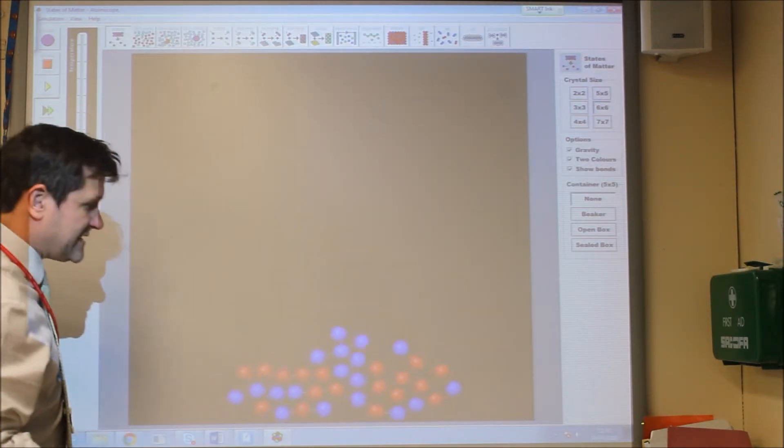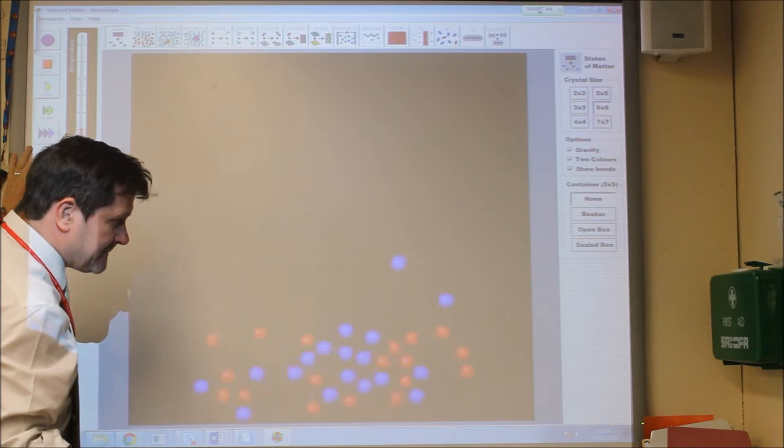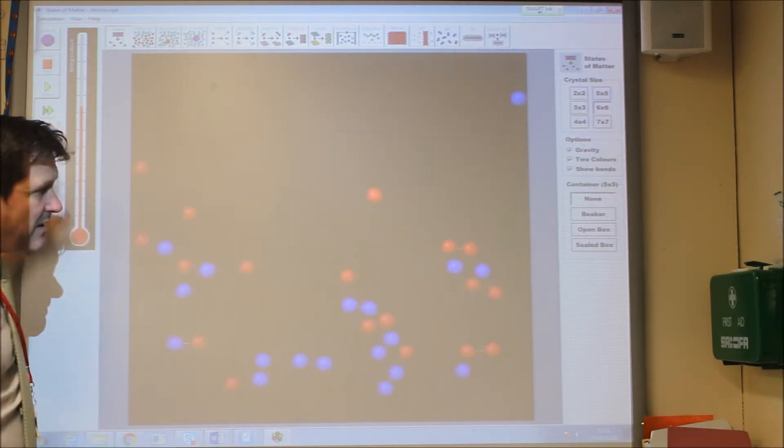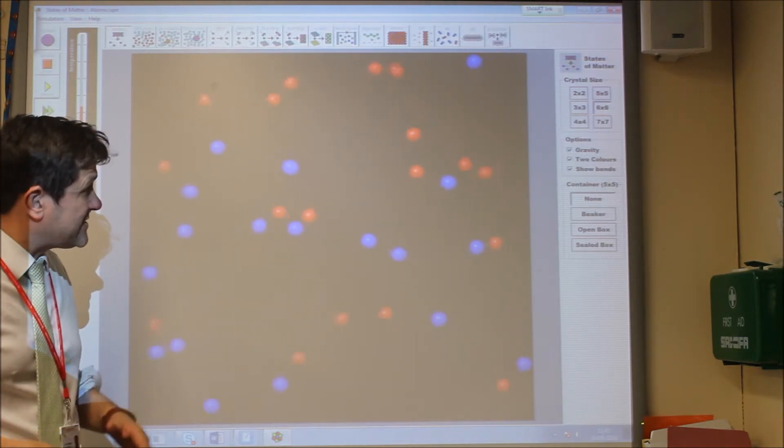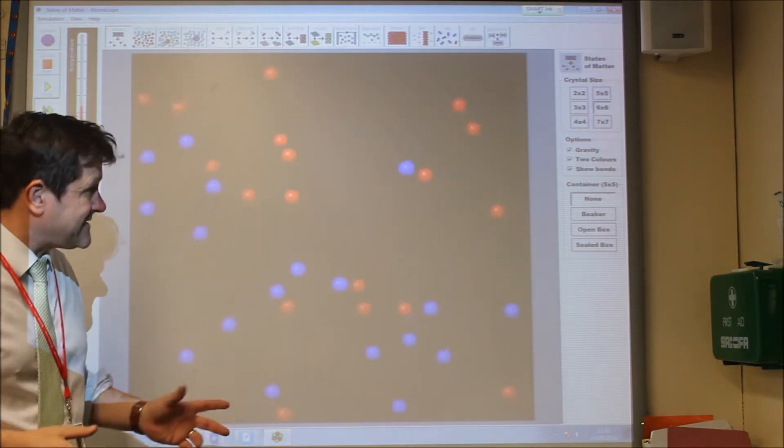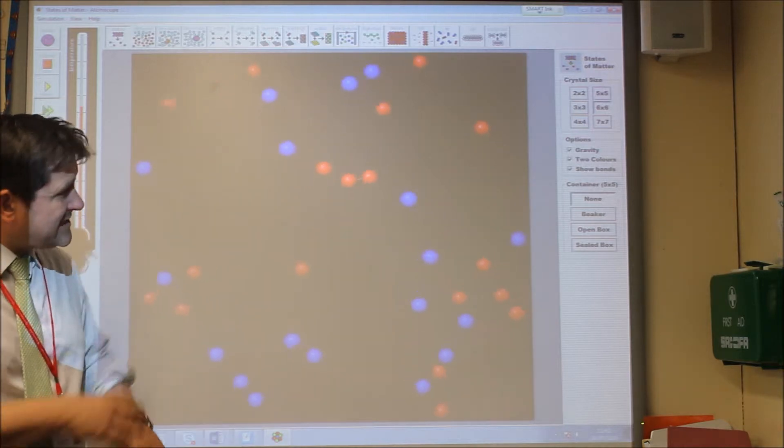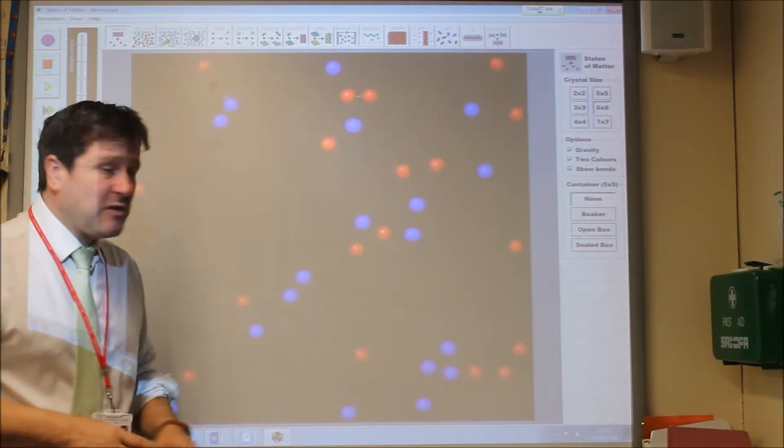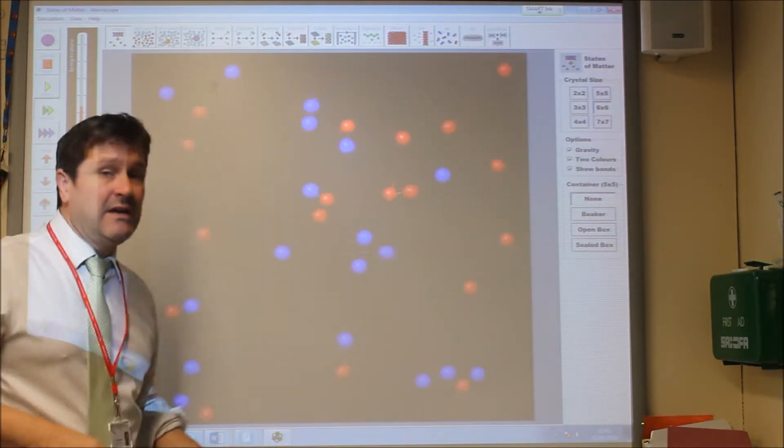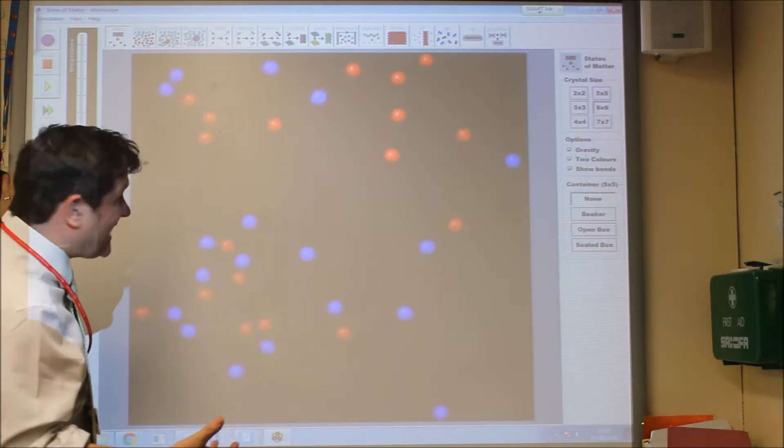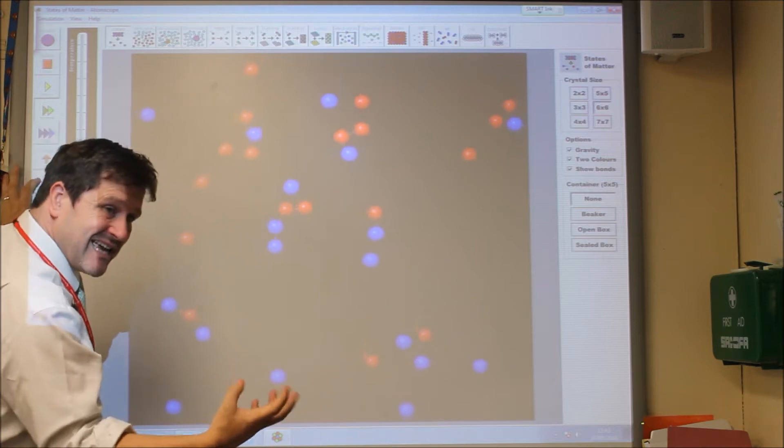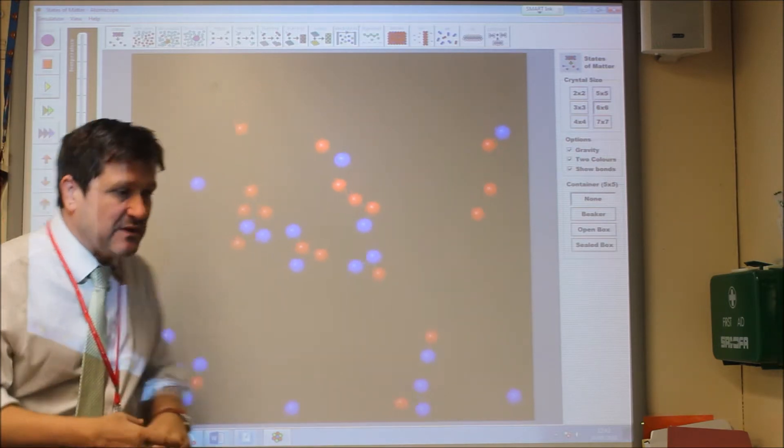If we raise the temperature further, the particles gain sufficient energy to overcome the bonds that hold them together. This here would now be a gas. We can see particles in the gas are very far apart and occupy the full volume of their container. If we were to remove the energy and cool it down, they would have less kinetic energy and therefore would form those bonds again.